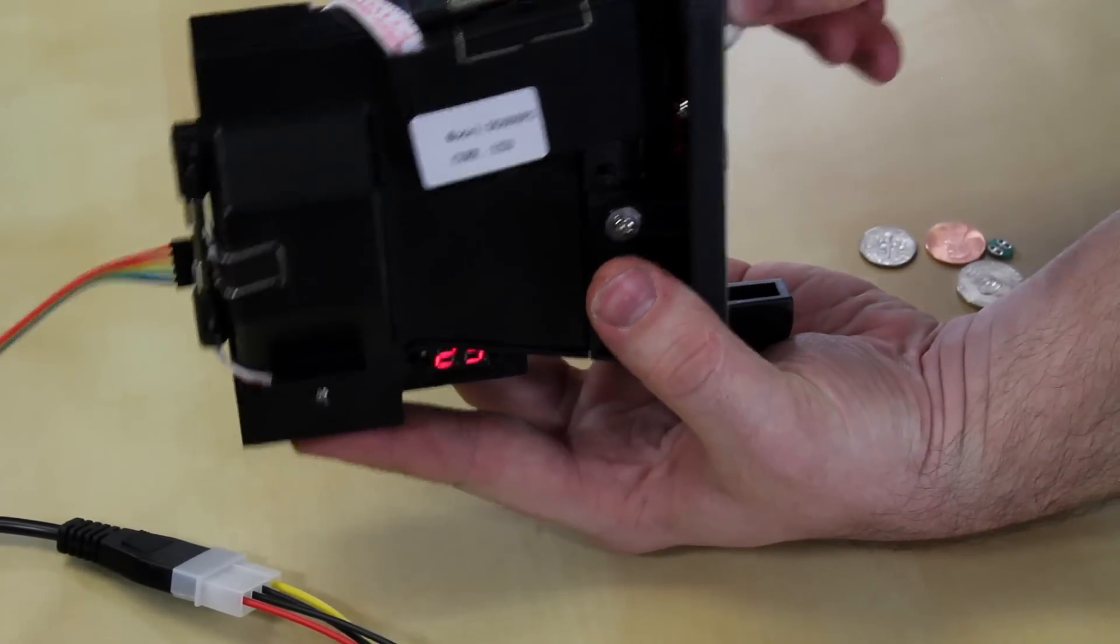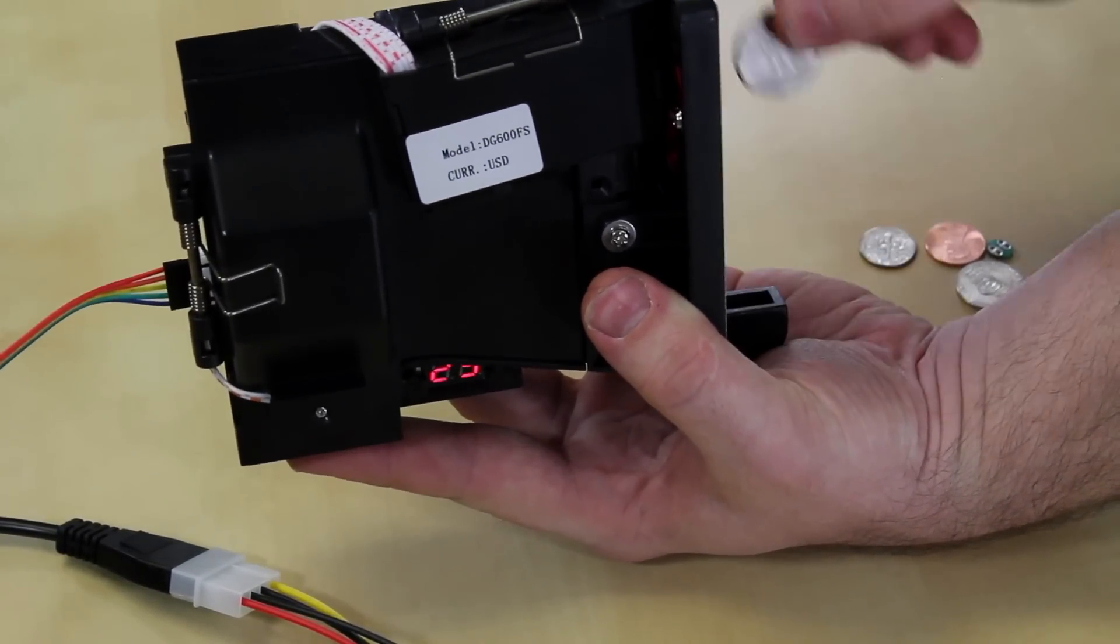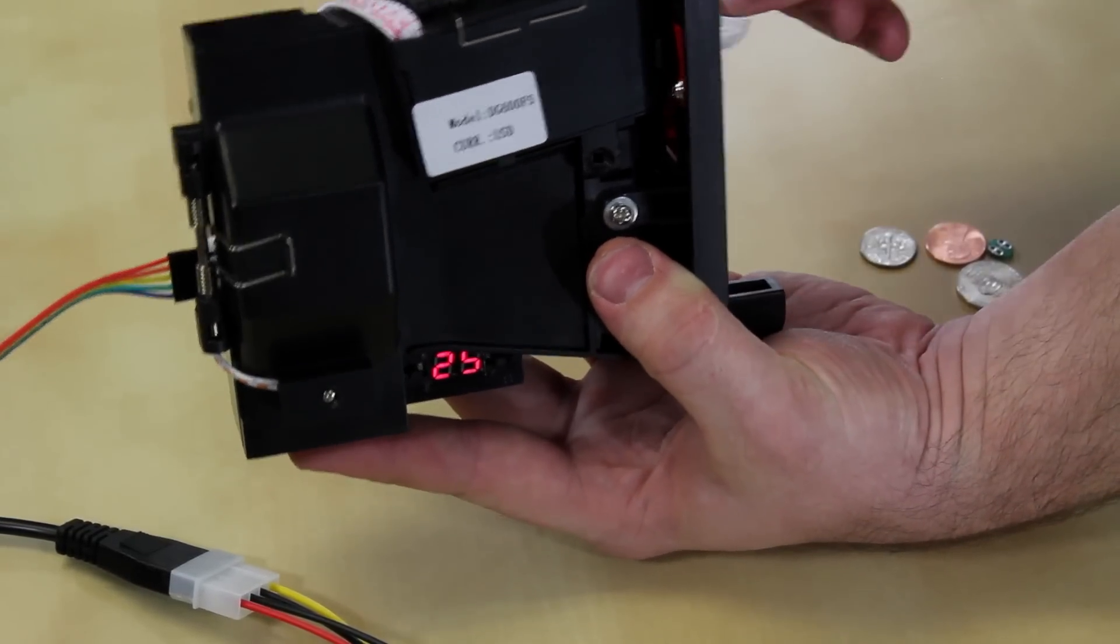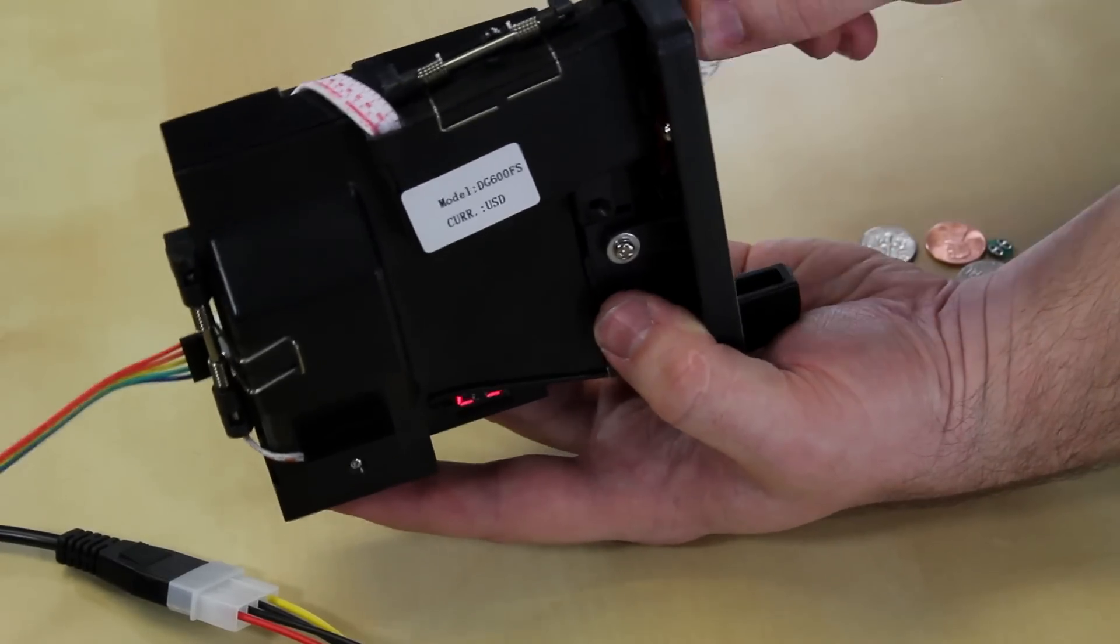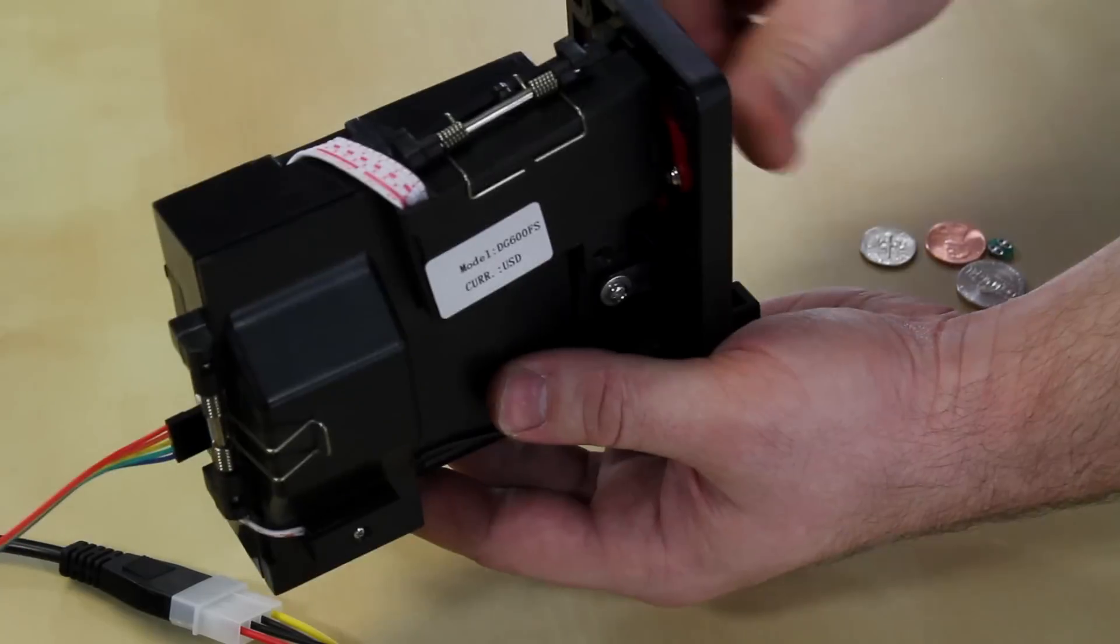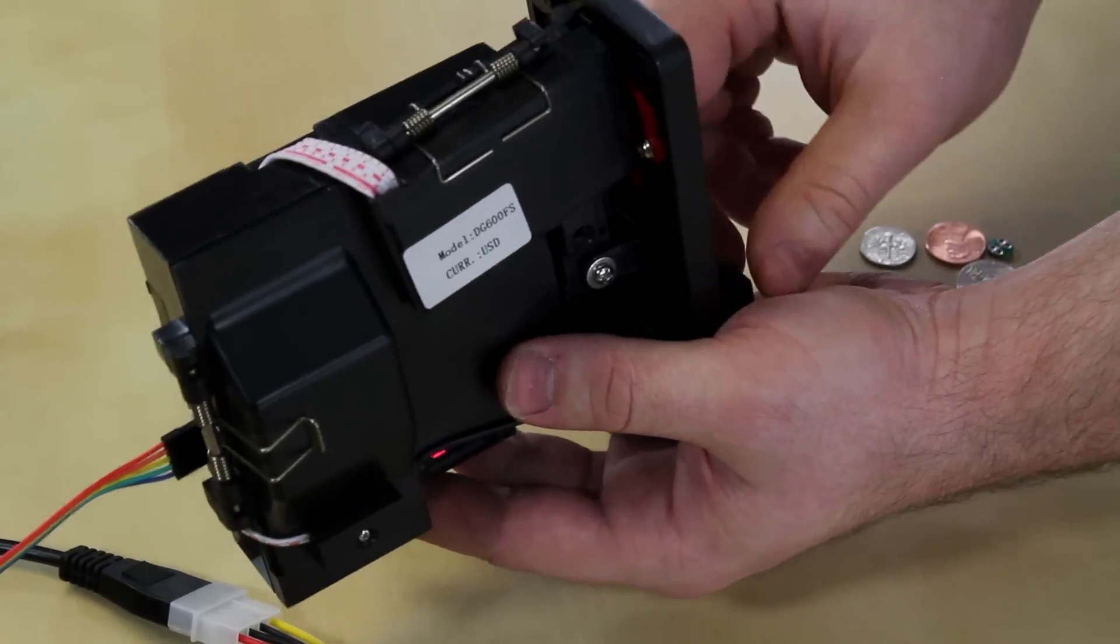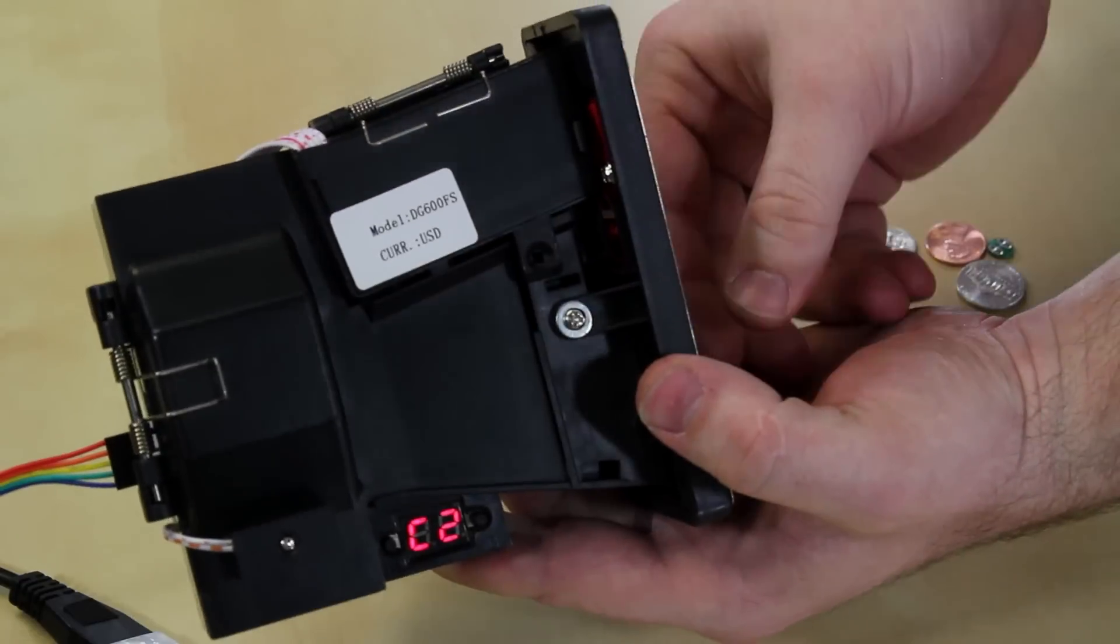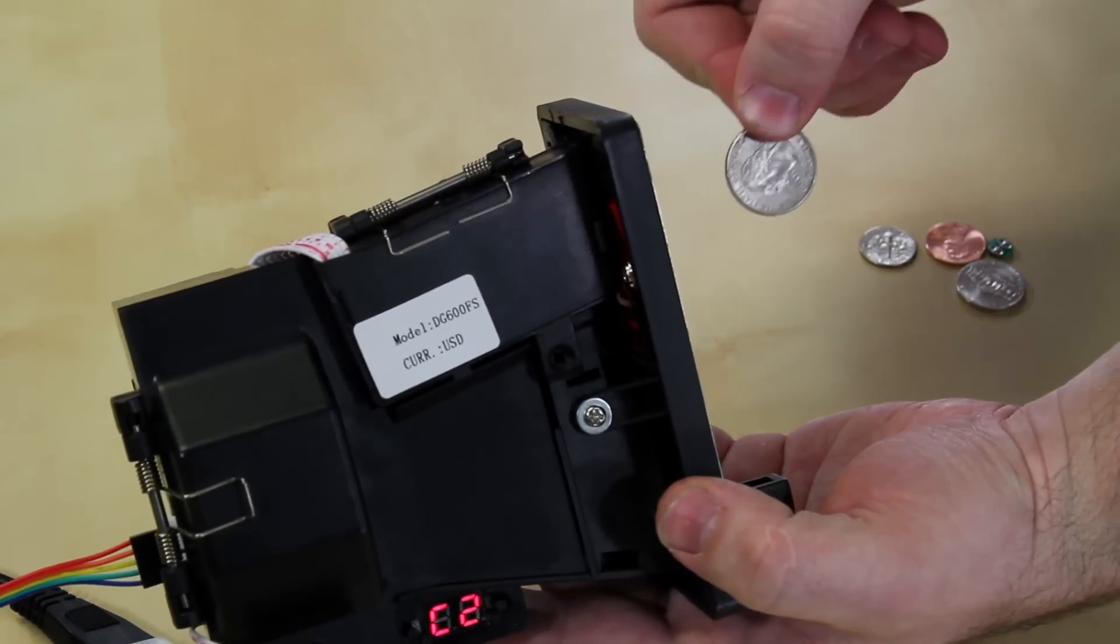And beeping, and one of these times it will beep a whole bunch and I'll know that it recognizes that coin. So there it goes. Now it knows what a quarter is and it will recognize that as 25 cents.